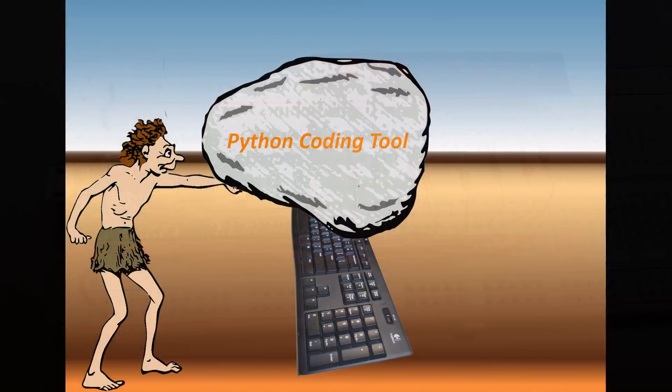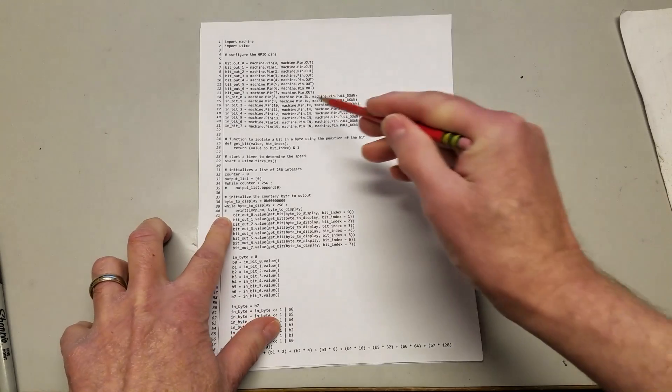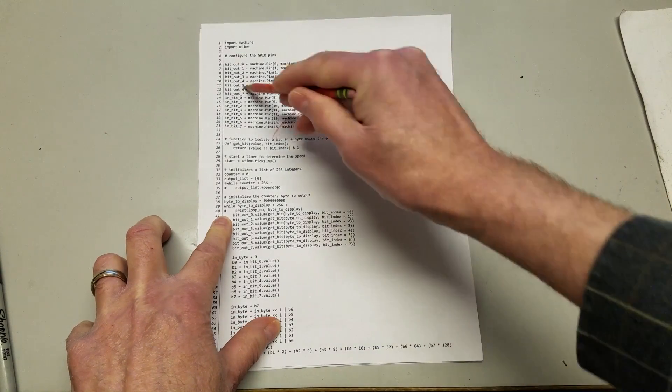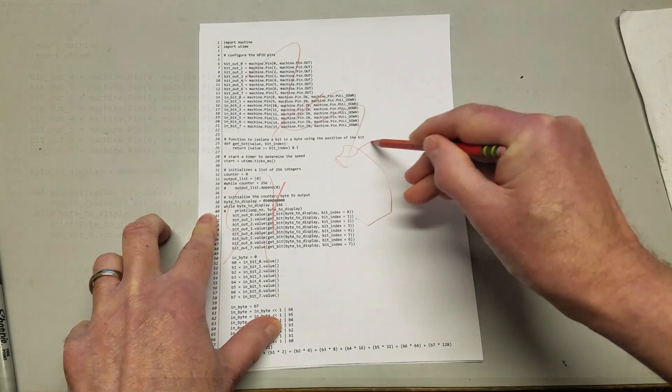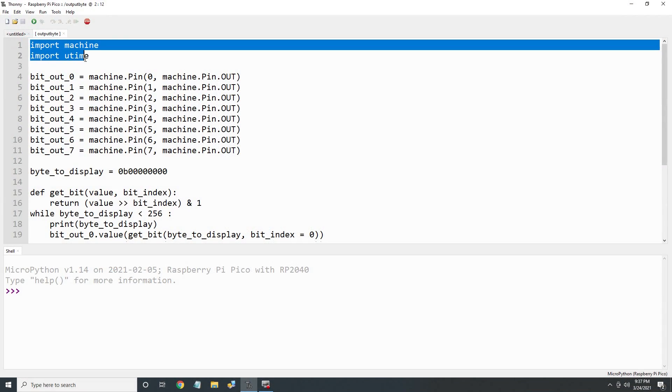Just to let you know, I'm a bit of a Neanderthal when it comes to programming in Python. You know, me get rock, hit code. I have no finesse here. I wouldn't be surprised if many of you could do this with half the code. So please bear with me, and I would appreciate any improvements you see. First, import the machine and utime libraries into MicroPython. These libraries let us access the input, output, and timing capabilities of the Pico.